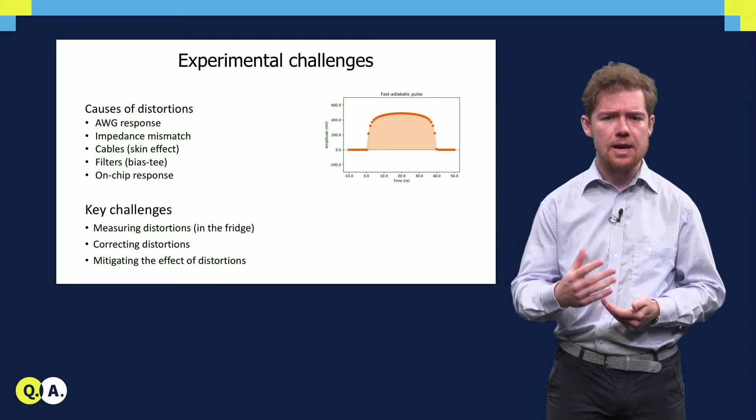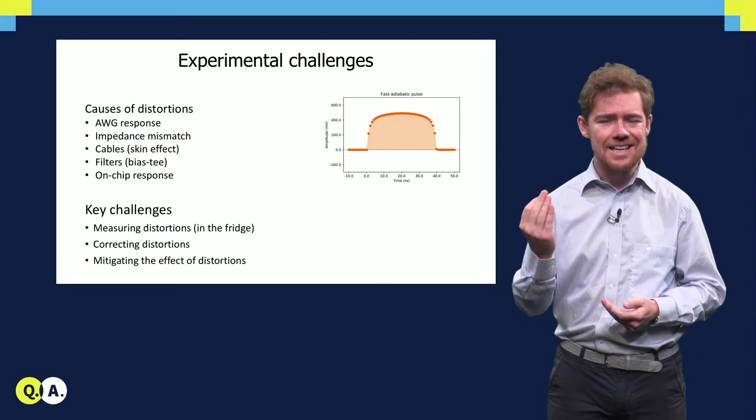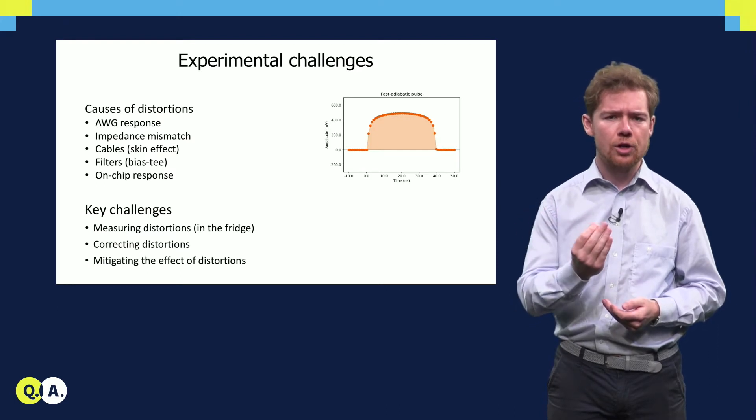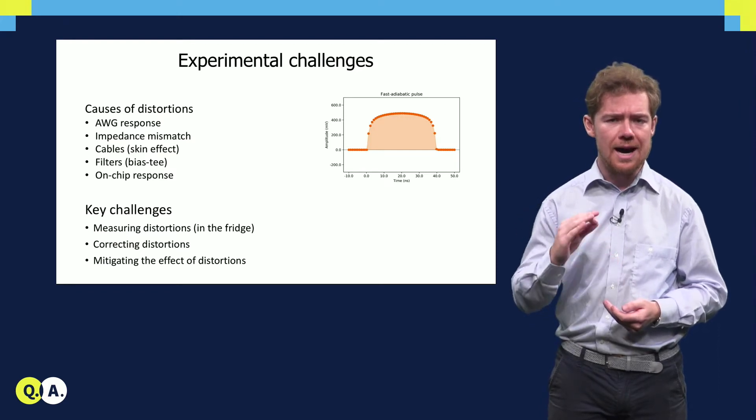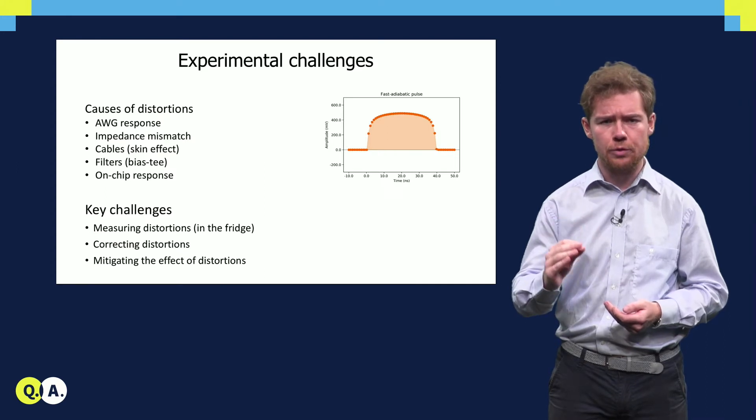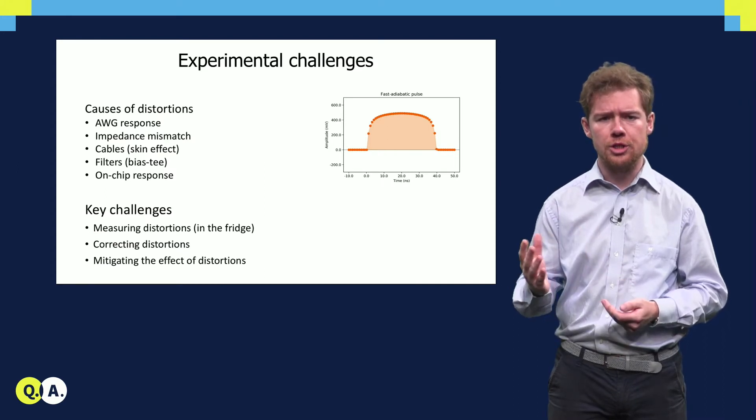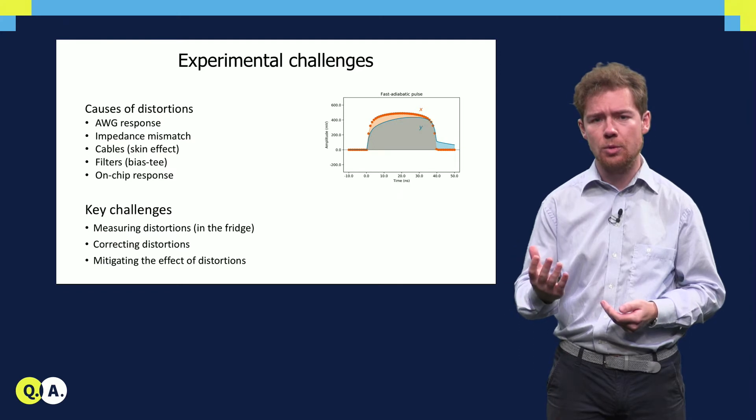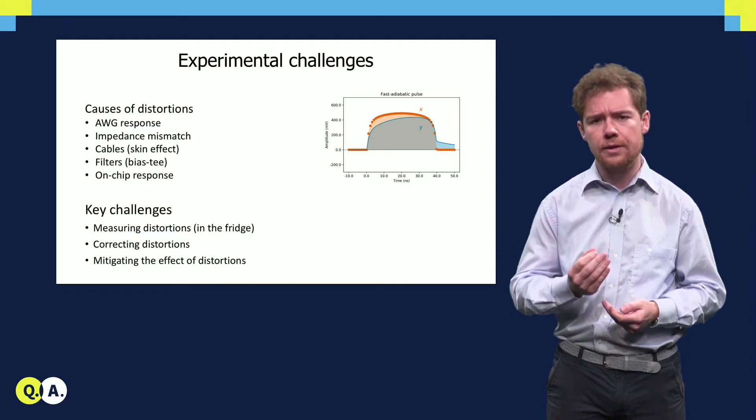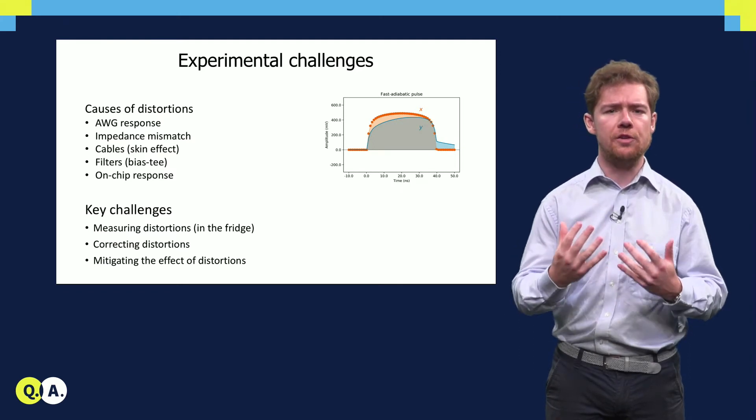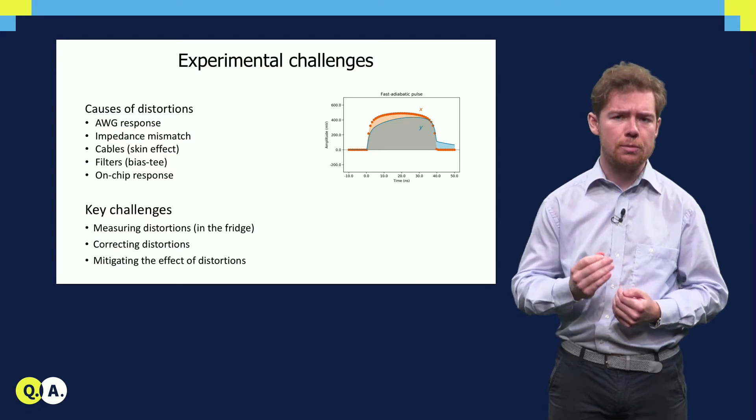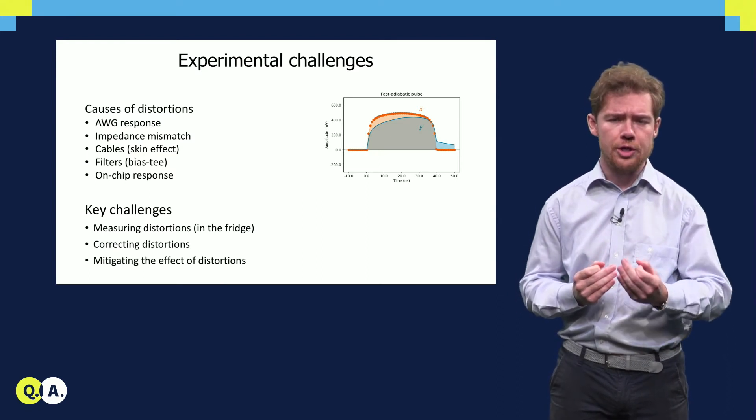Because the conditional phase and the leakage depend on the exact trajectory of the qubit, flux pulsing-based two-qubit gates are highly sensitive to distortions of the pulse shapes. Distortions can be caused by electrical components in the signal path between the waveform generator and the qubit, such as filters and cables, but even the on-chip response causes distortions on the signal the qubit experiences.